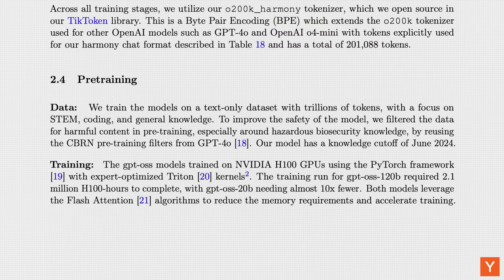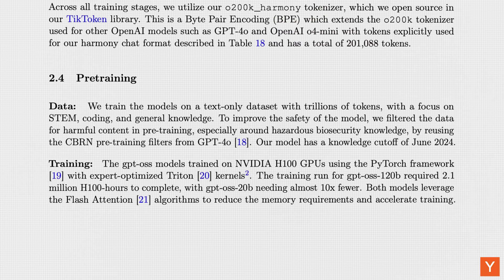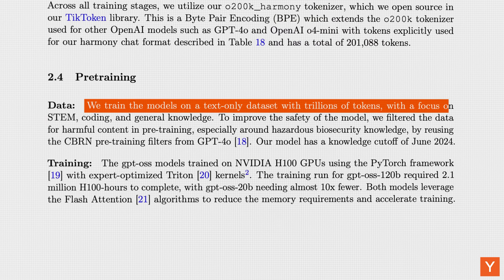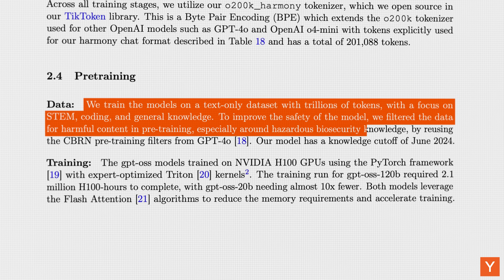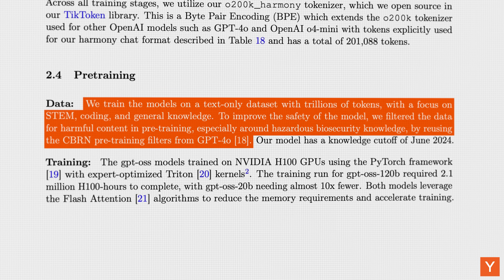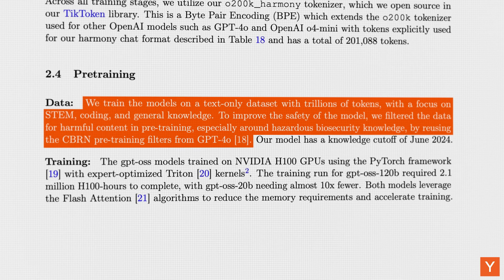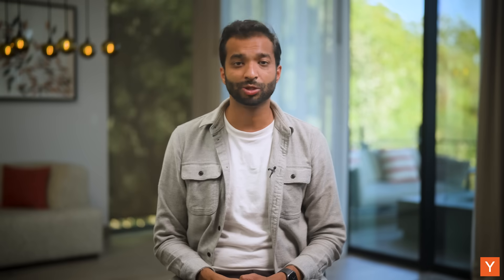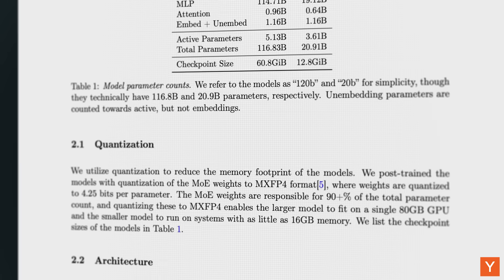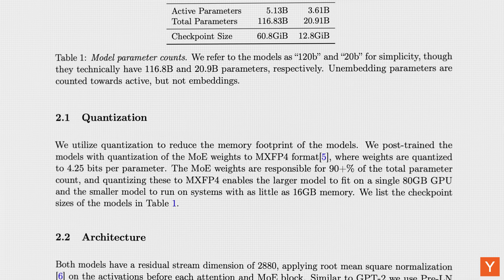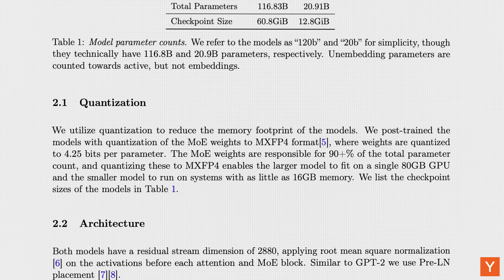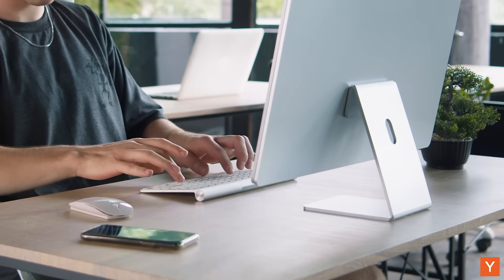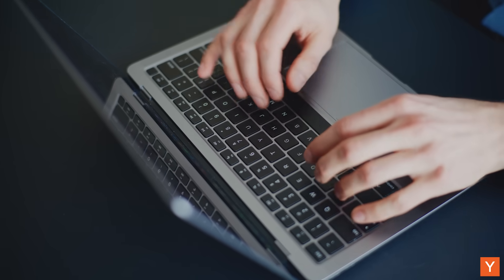As for the dataset GPT-OSS was trained on, OpenAI has only disclosed the broad strokes. The model was trained on a text-only corpus in the trillions of tokens with a focus on STEM, coding, and general knowledge. Harmful content was filtered out for safety, but beyond that there's little else known publicly. Once training was complete, the model was released in a quantized format by default, making it lightweight enough for deployment on modest hardware — consumer-grade GPUs, laptops, or other resource-limited setups. However, there's no unquantized version available.